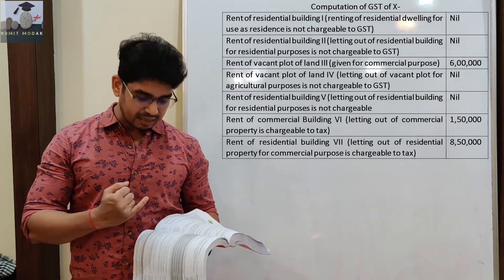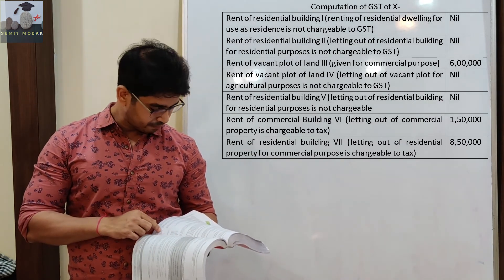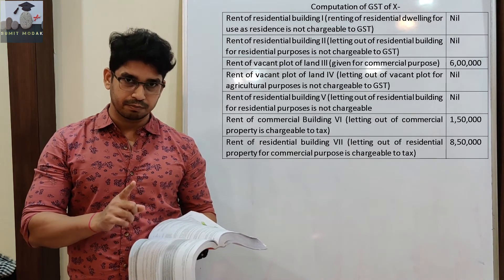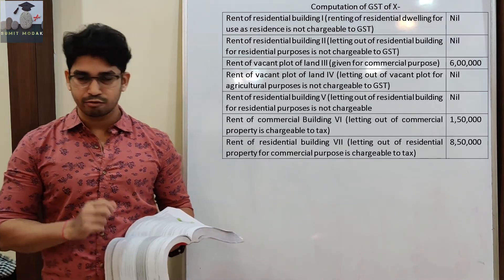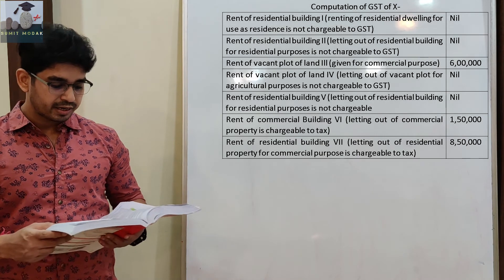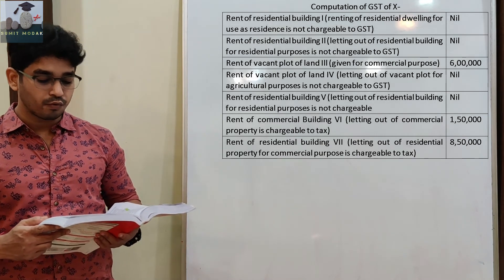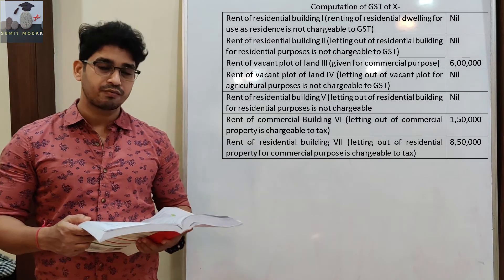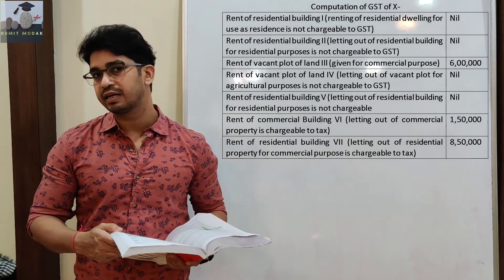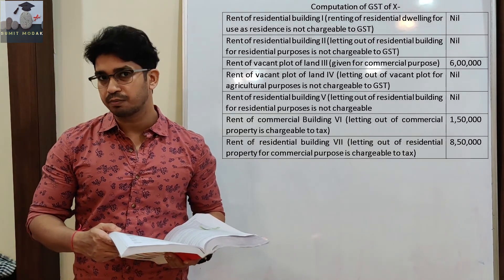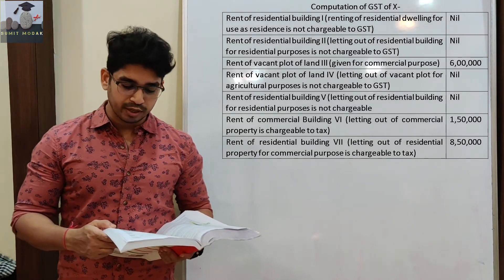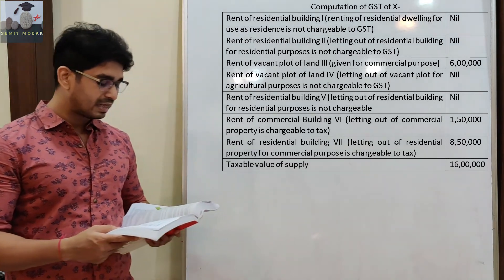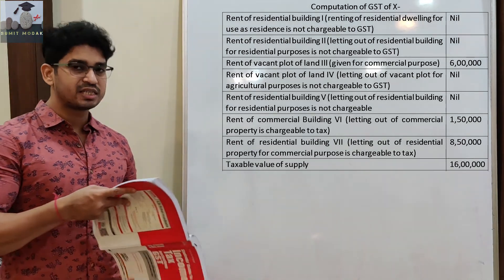Totalling up the taxable amounts: the NIL entries are set aside. The taxable amounts are: Rs. 6 lakh for vacant plot given to manufacturing company, Rs. 1,50,000 for commercial building, and Rs. 8,50,000 for residential building used for commercial purpose. Adding these together, we get the taxable value of supply as Rs. 16 lakh. Then GST will be calculated on this amount.